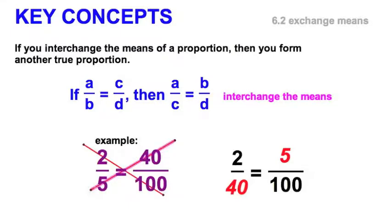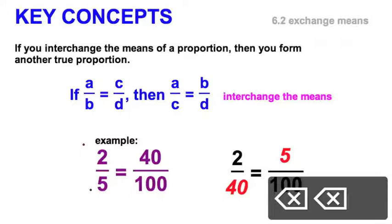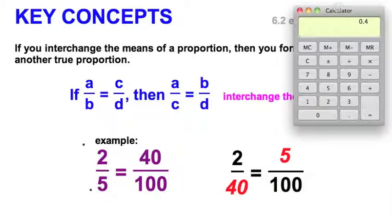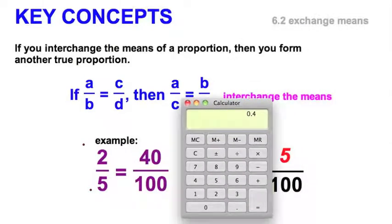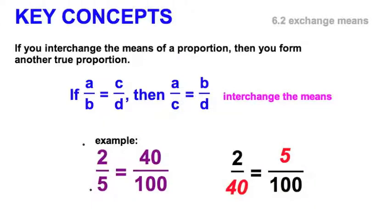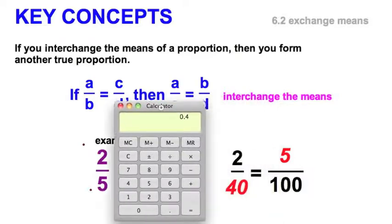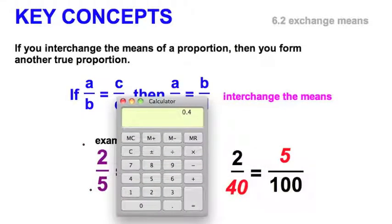Now we know this is true several ways. First off, we know that if we do a cross product, 2 times 100 equals 5 times 40, and we still have 2 times 100 equals 5 times 40 on the right because multiplication is commutative. However, I want to show you one other way to consider it. Going back to this first one, or this proportion on the left, let's take out our calculator and you probably already know that two-fifths, 2 divided by 5, is 0.4, and 40 divided by 100 is also 0.4.